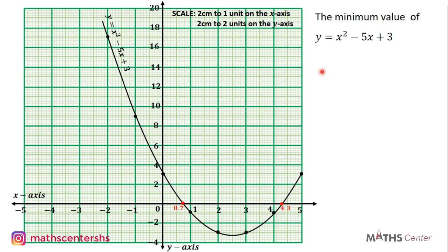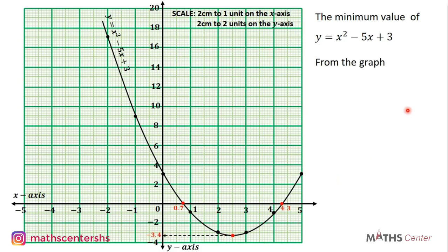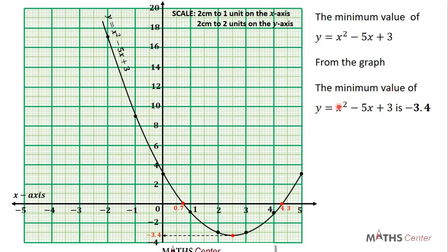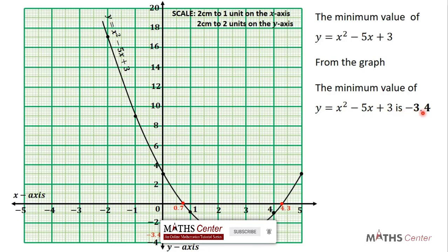For part c(ii), we find the minimum value of y = x² - 5x + 3. The minimum occurs at the turning point — the point where the curve turns. We locate the turning point on the graph and trace it to the y-axis to get its y-coordinate. From the graph, the y-coordinate of the turning point is -3.4. So the minimum value of the function is -3.4.